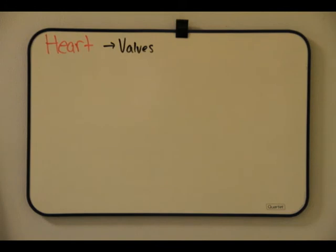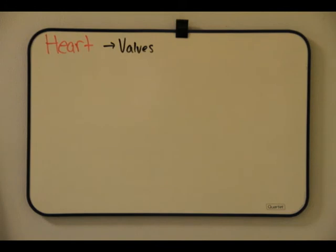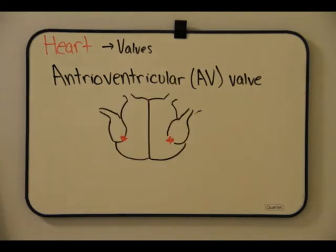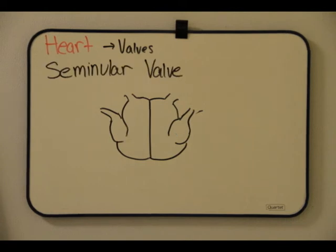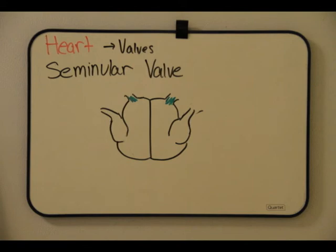Valves in the heart prevent backflow. The atrioventricular, or AV, valve is between each atrium and ventricle, and it keeps blood from flowing back into the atria. The semilunar valves are located at the two exits of the heart: where the aorta leaves the left ventricle and where the pulmonary artery leaves the right ventricle.